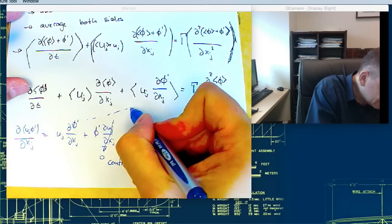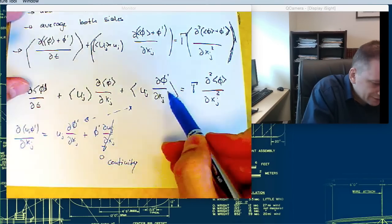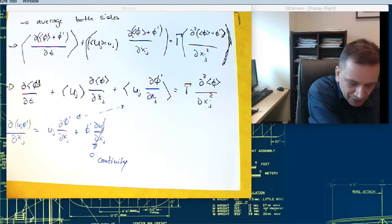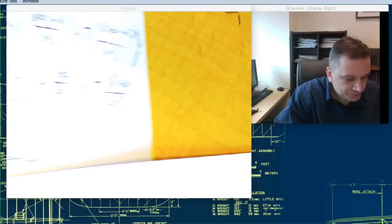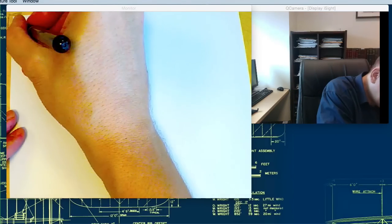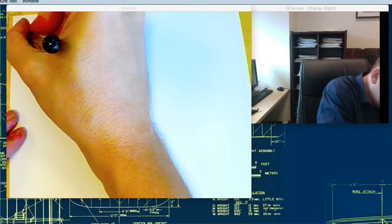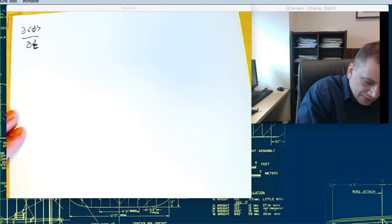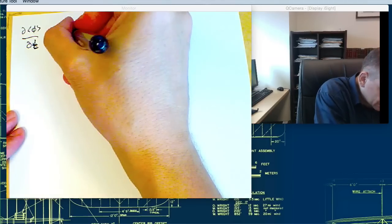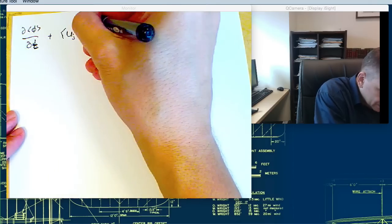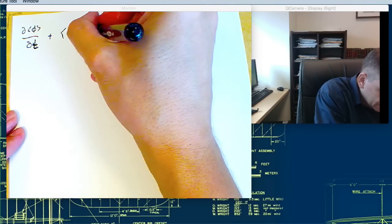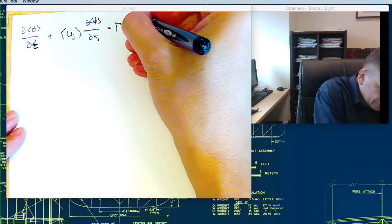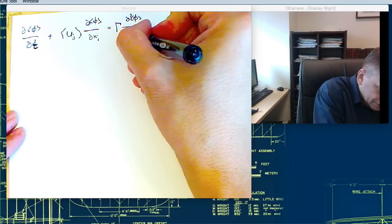This one is identical to this one, so we can replace this one over there and put it to the other side. Then we get the following expression: ∂φ̄/∂t plus ū_j ∂φ̄/∂x_j equals γ ∂²φ̄/∂x_j² minus ∂(u_j' φ')/∂x_j.